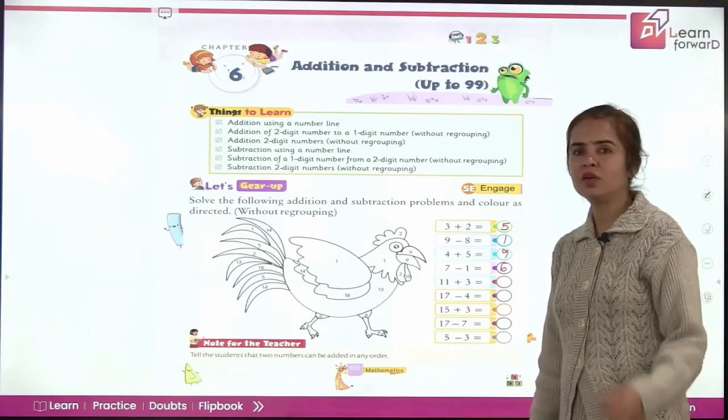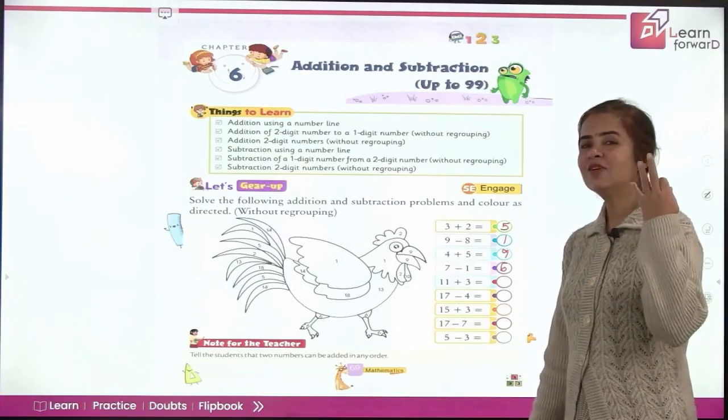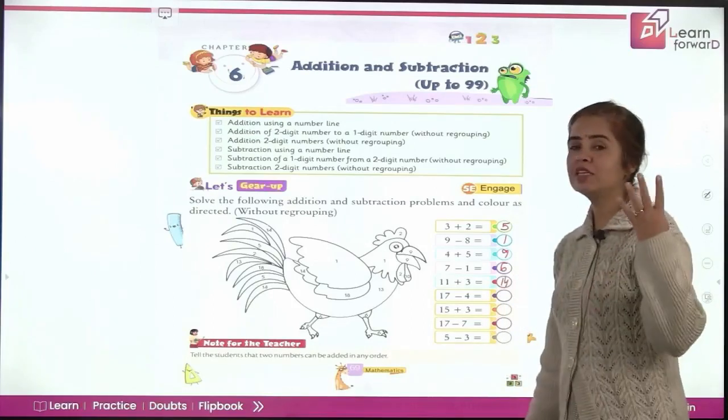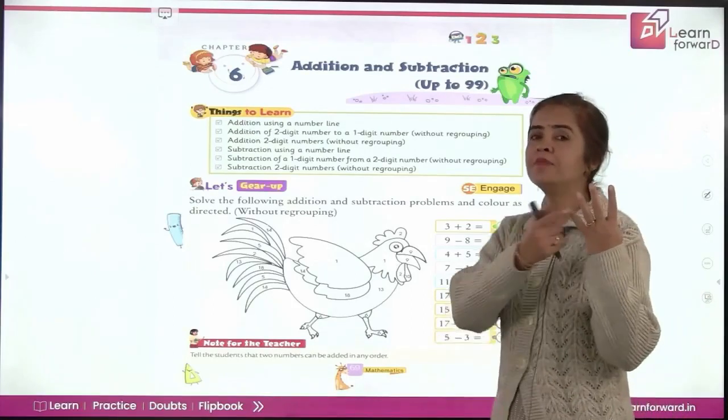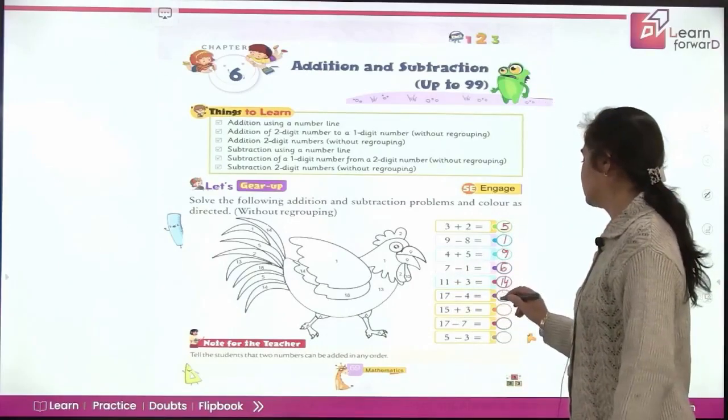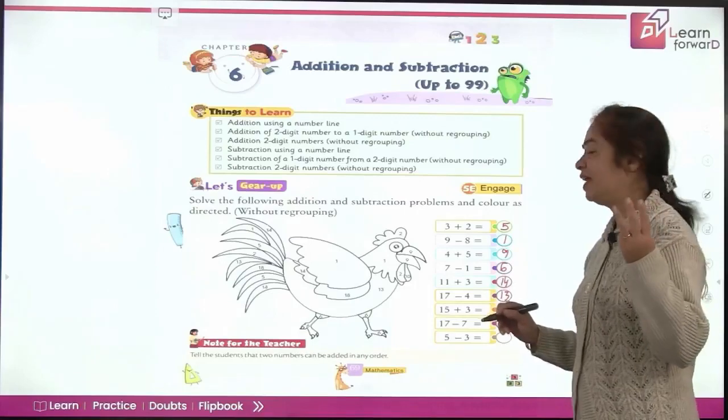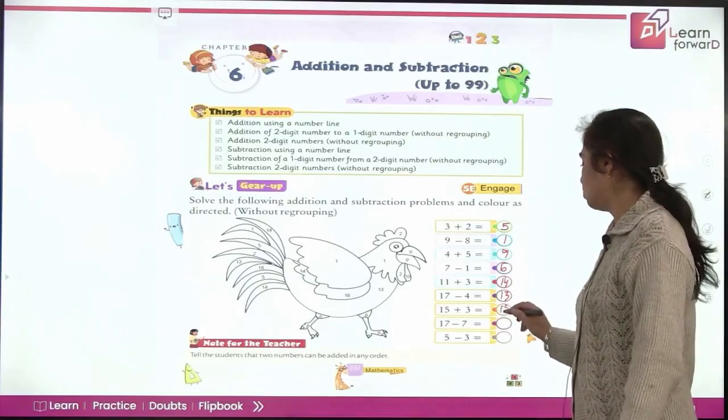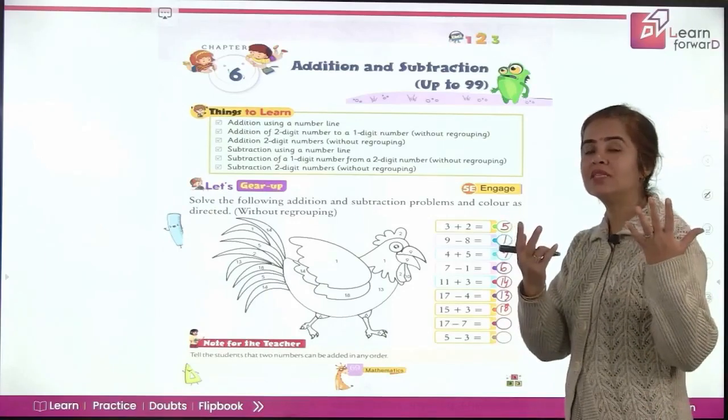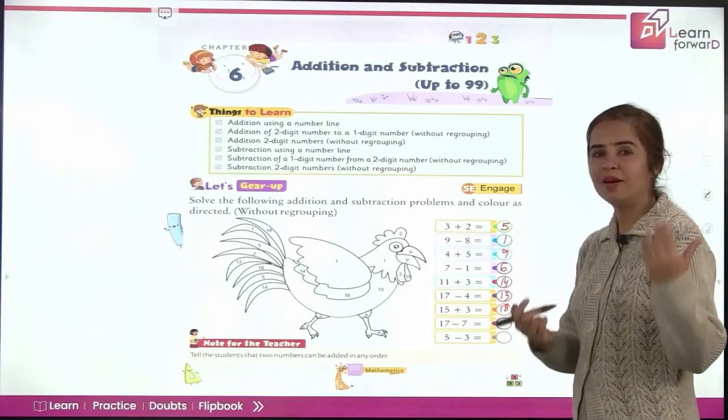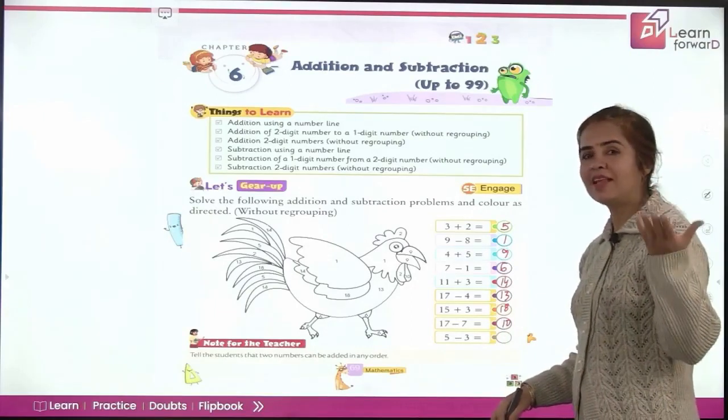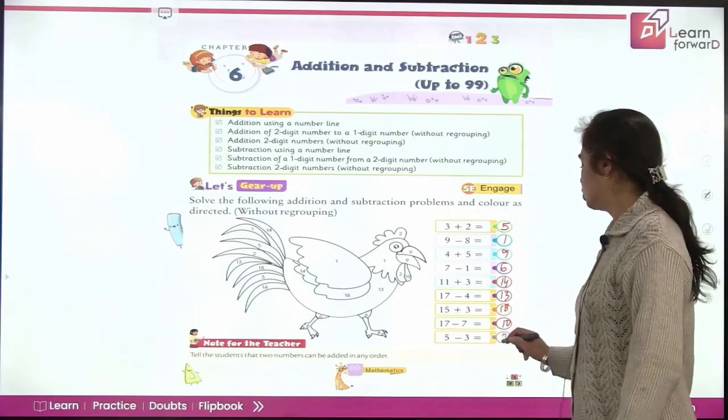How much is 11 plus 3? Go forward. Yes, 12, 13, 14. You are right here. 17 minus 4. Let's go backward. 16, 15, 14, 13. Perfect answer. How much is 15 plus 3? 18. Yes. And how much is 17 minus 7? Count 7 backwards and you get brilliant answer. You get 10. And how much is 5 minus 3? That's just 2. Good students.